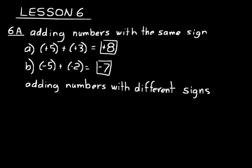Now let's add numbers with different signs. Let's try negative five plus a positive three. We look at the absolute values — five and three — and when they have different signs, we subtract: five minus three equals two. We give the answer the sign of the number with the bigger absolute value. Five has the bigger absolute value and it has a negative sign, so our answer is negative two.